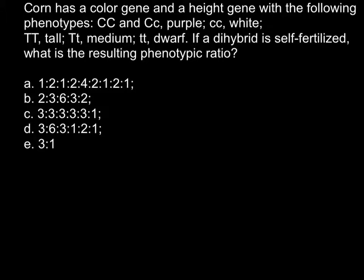Hi, today I have another video about dihybrid cross. Here is a problem: Corn has a color gene and a height gene with the following phenotypes. Homozygous dominant and heterozygous are purple, and homozygous recessive is white. Homozygous dominant is tall, heterozygous is medium, and homozygous recessive is dwarf.